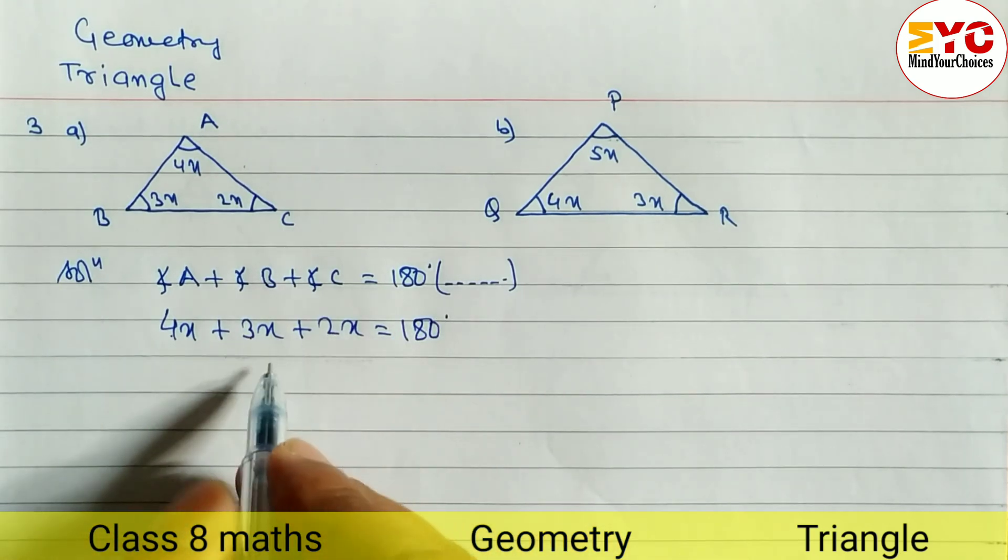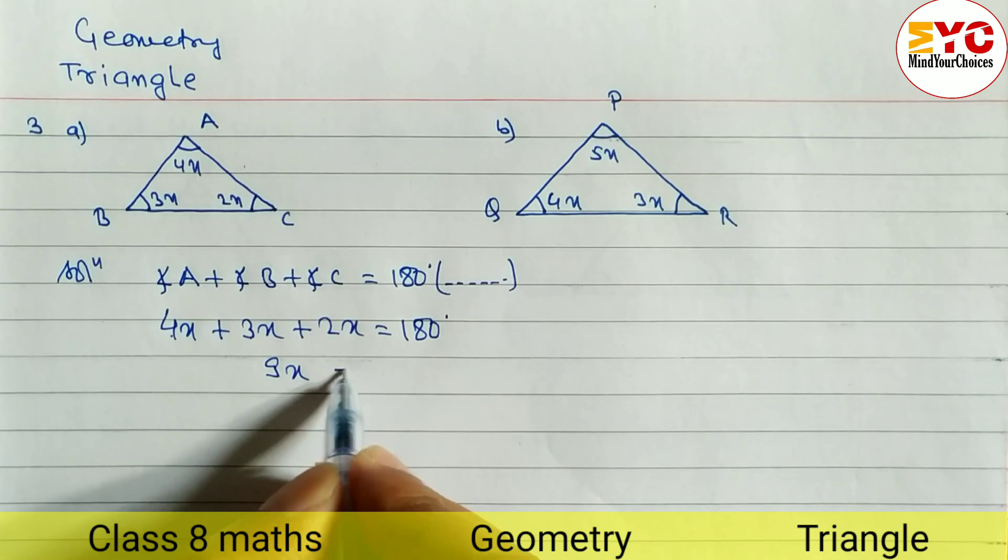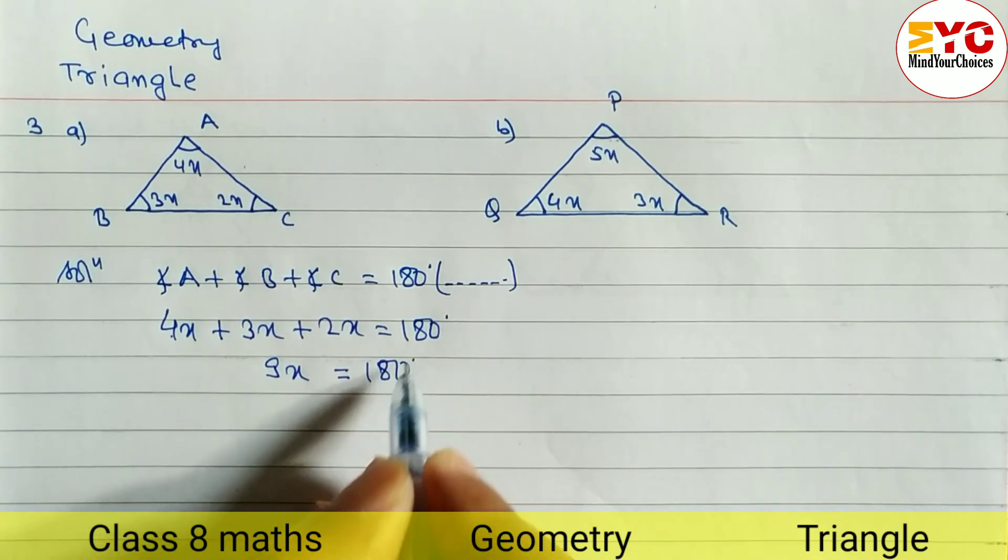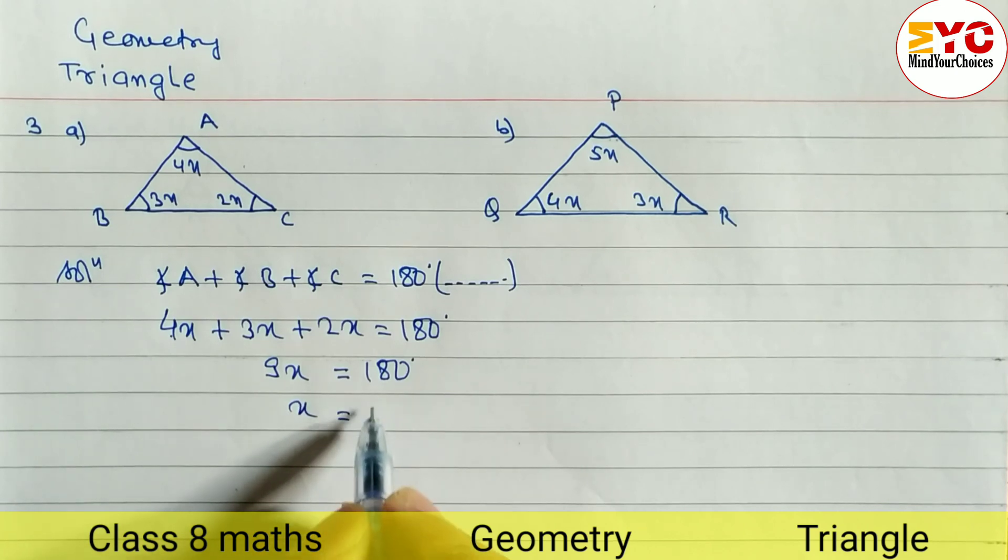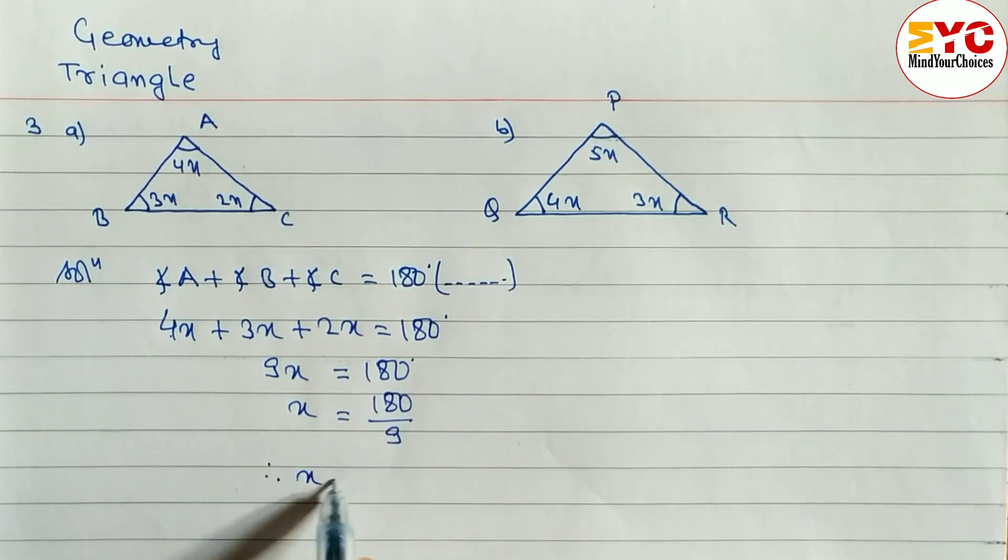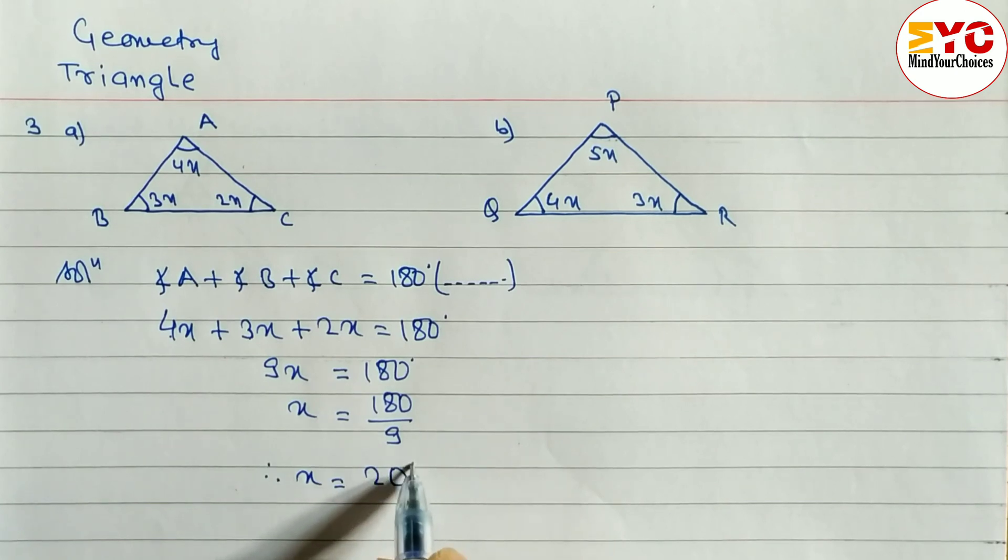4 plus 3, 7, 7 plus 2, 9. So we have to write here 9x which is equal to 180 degrees. Now this is multiplication, so we have to divide. So x is equal to 180 divided by 9. Therefore x is equal to 20 degrees.